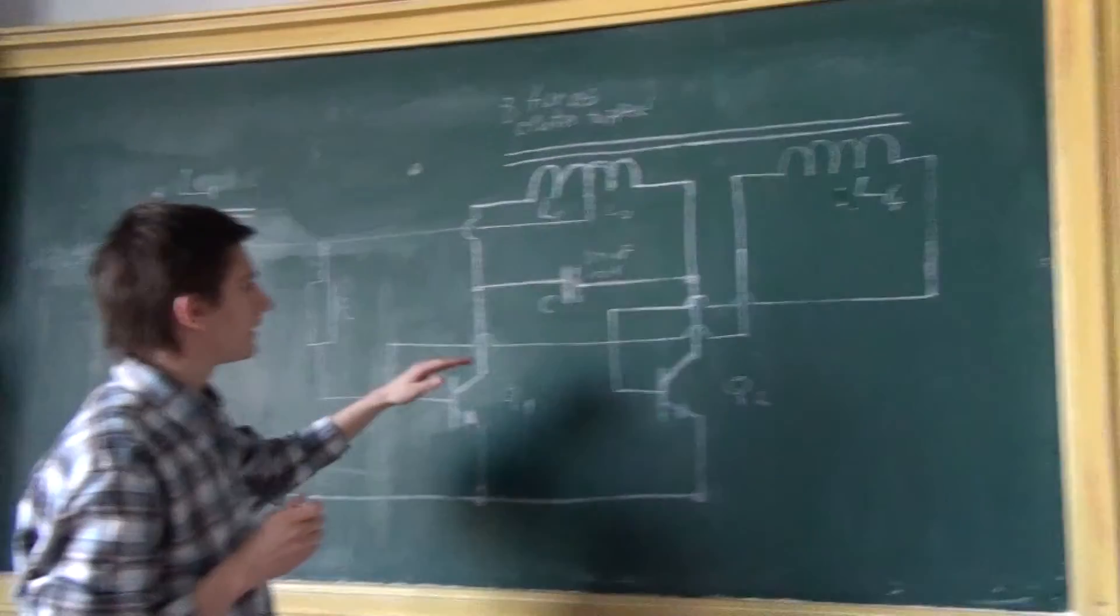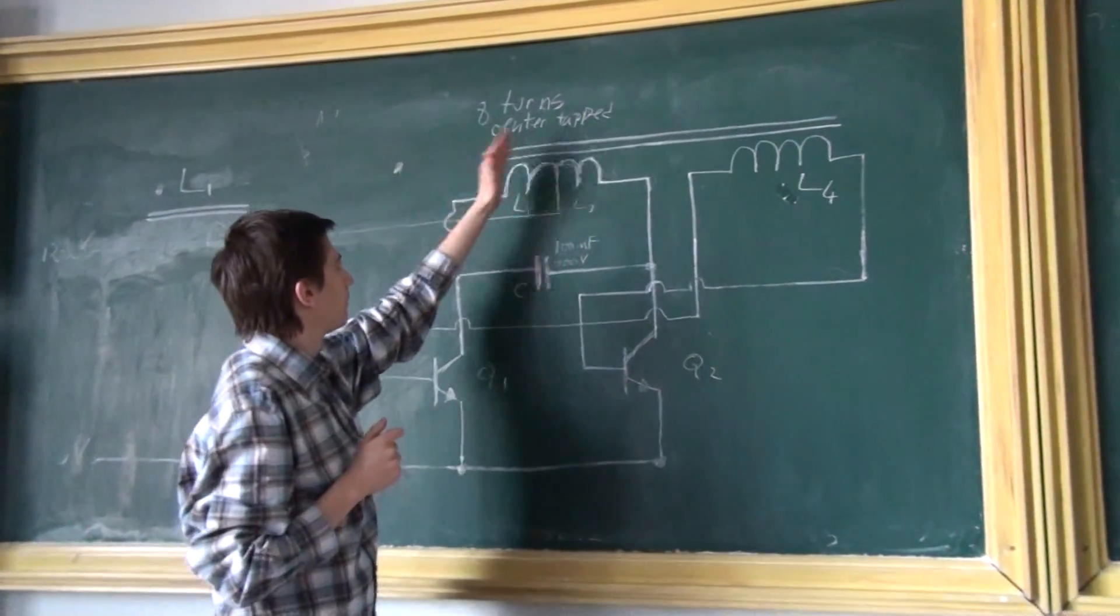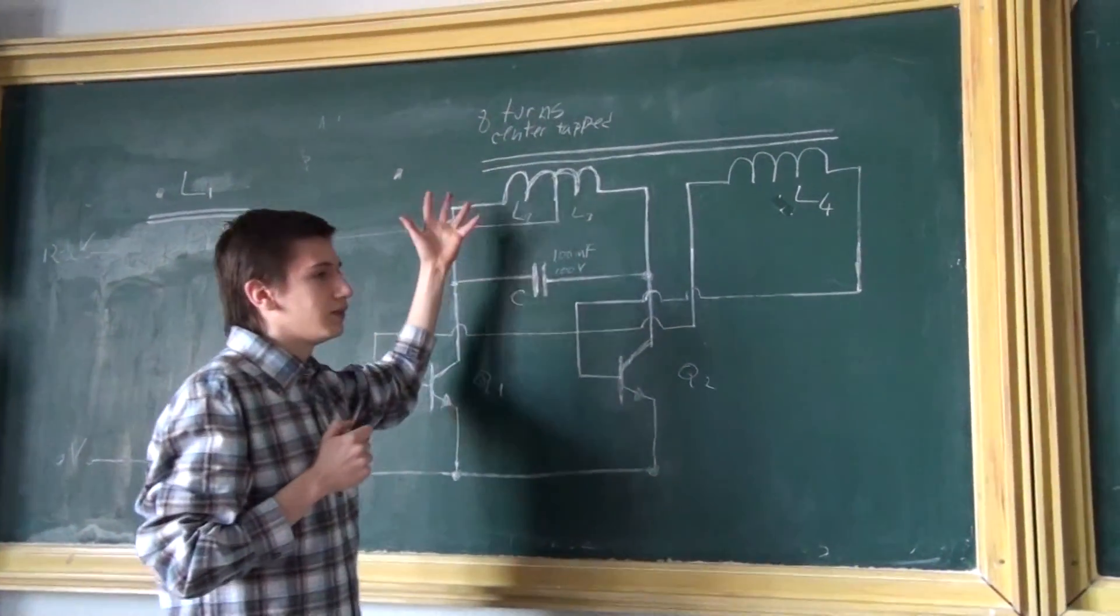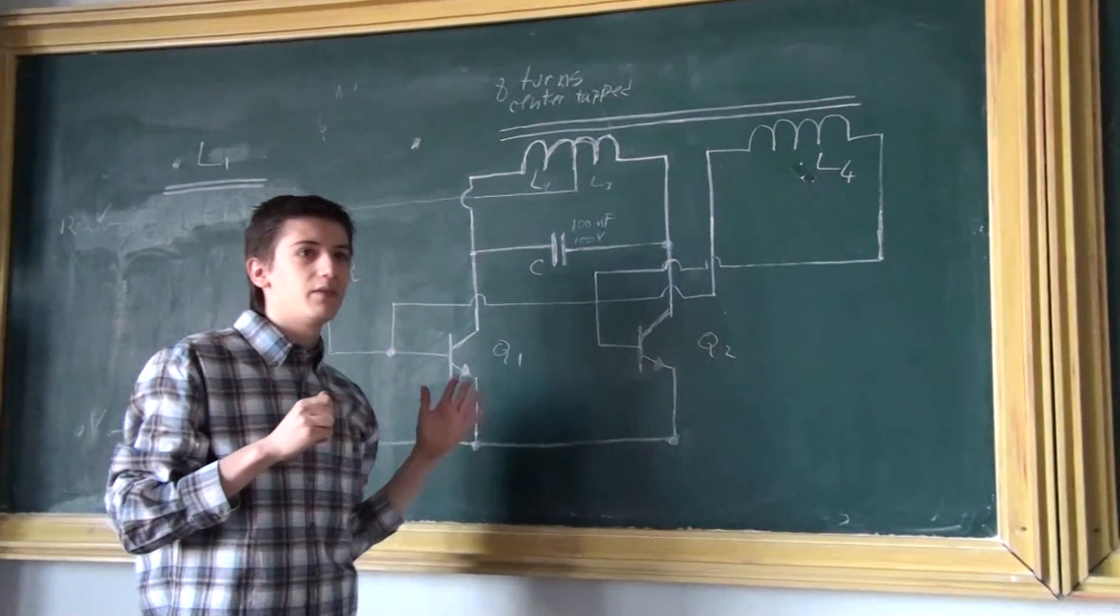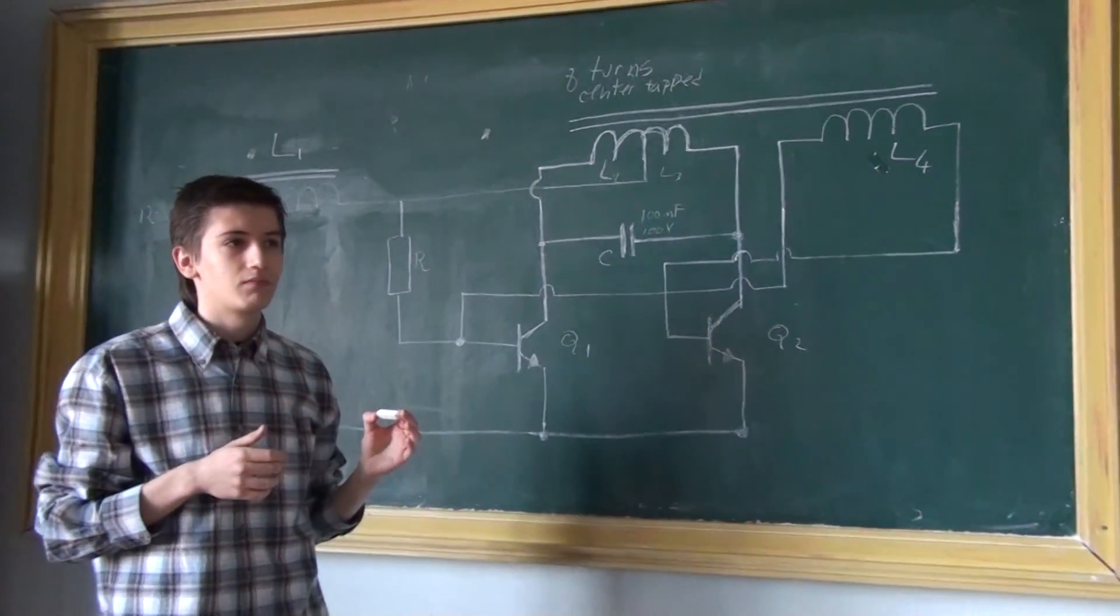And the cycle repeats tens of thousands of times per second. This results in an alternating flux in the ferrite core. And in the secondary winding, which I have not drawn, results tens of thousands of volts at relatively small intensity.